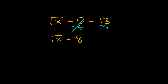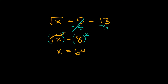Now in order to get rid of a square root all you need to do is square it. And whatever you do to one side of the equation you have to do to the other, so we have to square this whole side also. On this side the square root and the squared exponent cancel each other out, so then we're just left with x is equal to 8 squared, which is 64.